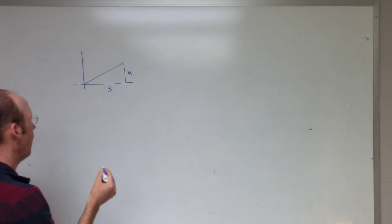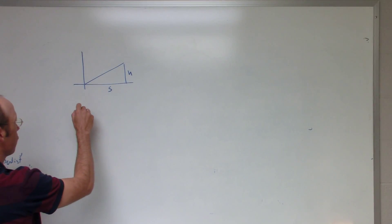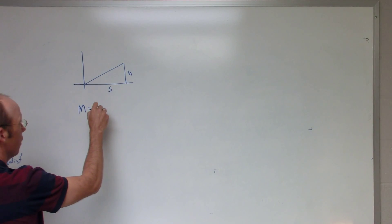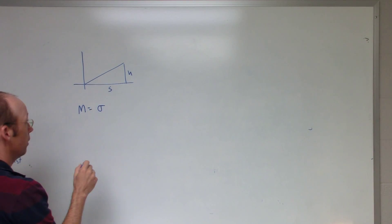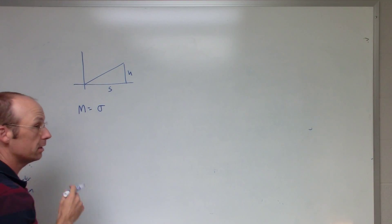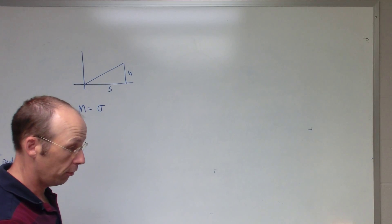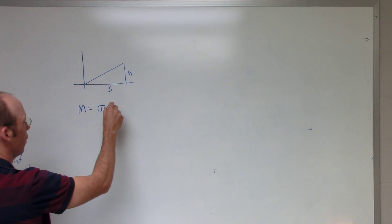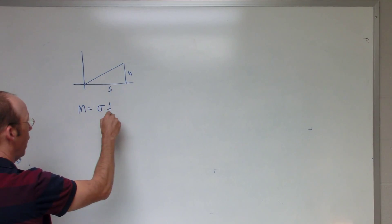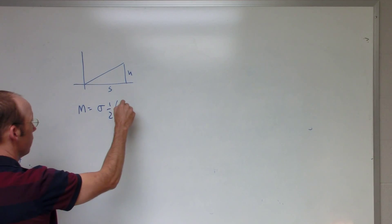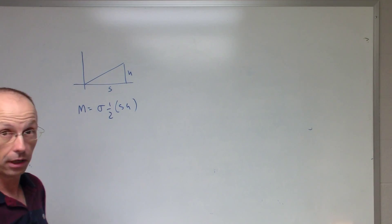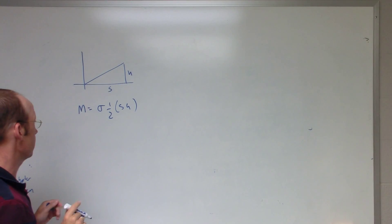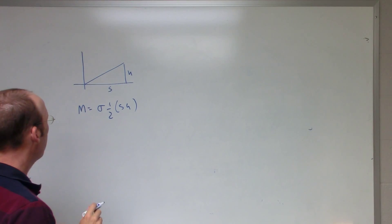It has some thickness, but the total mass of this triangle is going to be σ times the area. σ is the mass per unit area. The area of this triangle is one-half base times height, so that's the total mass.